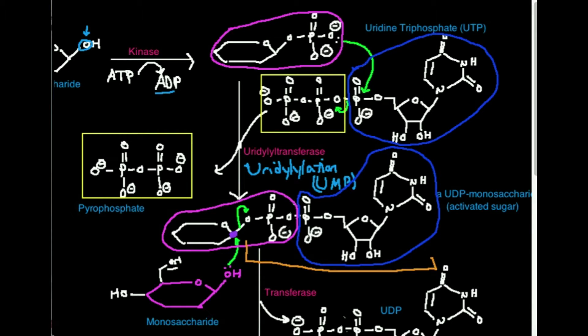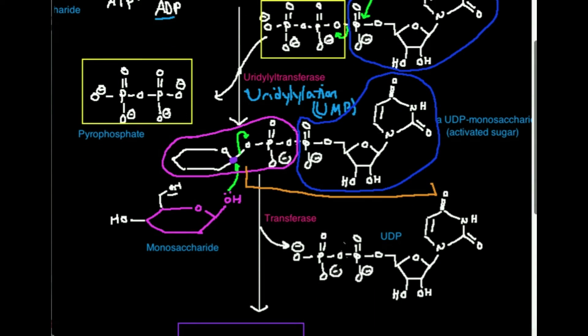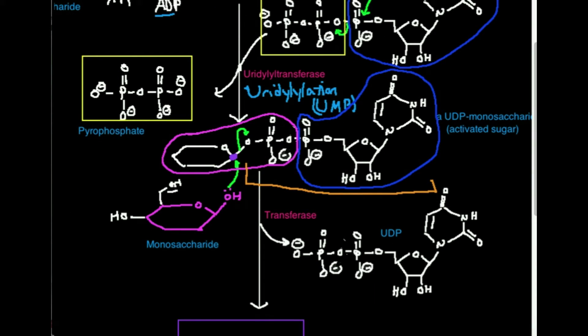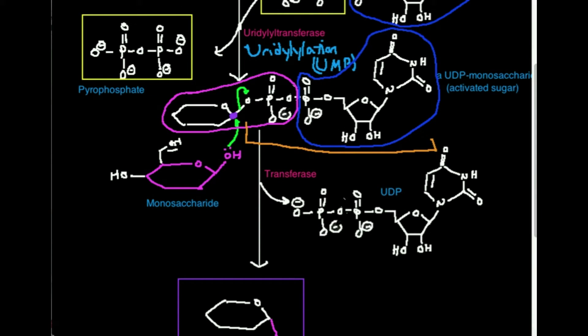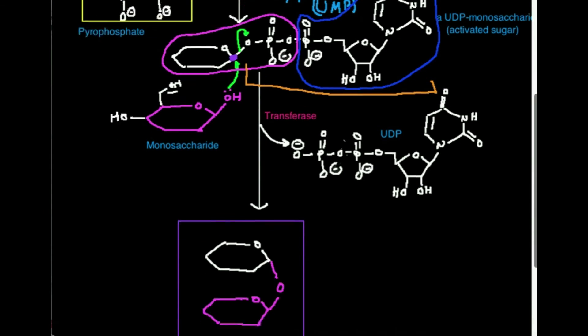Thus, we call it a UDP monosaccharide. If this monosaccharide was glucose, it would be UDP glucose. We could even have fructose. If it was fructose, it would be a UDP fructose. Then we catalyze a transferase reaction where we transfer something else like a monosaccharide onto it. And UDP is an excellent leaving group. So it leaves, creating a disaccharide.